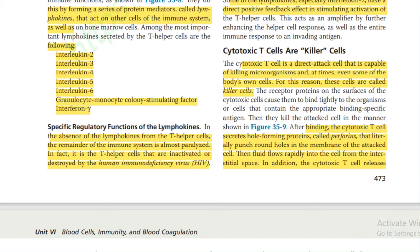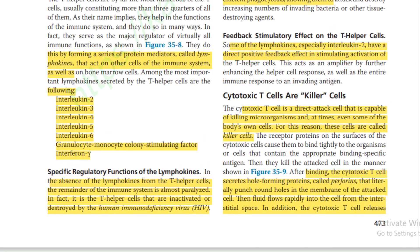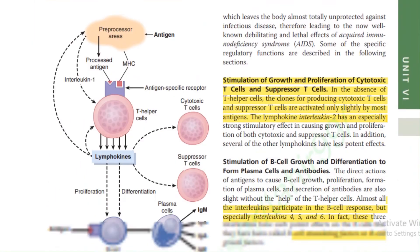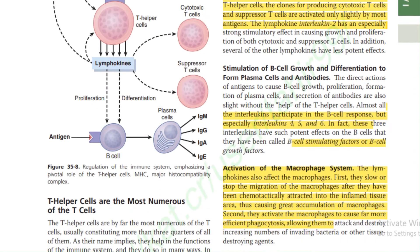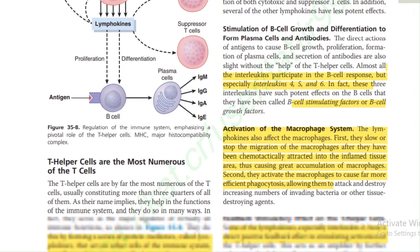It is the T helper cells that are inactivated or destroyed by the human immunodeficiency virus (HIV). Stimulation of growth and proliferation of cytotoxic and suppressor T cells: in the absence of T helper cell clones, cytotoxic and suppressor T cells are activated only slightly by most antigens. The lymphokine interleukin-2 has a specially strong stimulative effect in causing the growth and proliferation of cytotoxic and suppressor T cells.